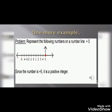Here, we have to represent plus 5 on a number line. For this, we have to notice that all the numbers which are on the right side of 0 are positive, and those on the left side of 0 are negative. So we will be representing plus 5 on the right side of 0.